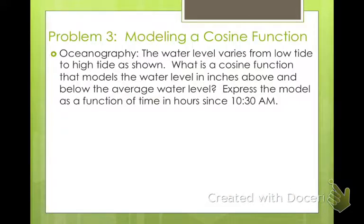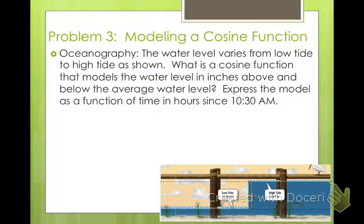Modeling a cosine function. In oceanography, the water level varies from low tide to high tide as shown. What is a cosine function that models the water level in inches above and below the average water level? Express the model as a function of time in hours since 1030 a.m. So if you look at this picture here, we have low tide at 1030 a.m., and we have high tide at 440 p.m., and the difference between the two is 60 inches.